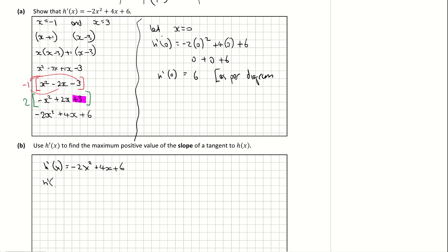So I'm finding h'(1). And that is equal to -2(1)² + 4(1) + 6. So I'm just subbing in my x coordinate, which is 1. And that is giving me -2 + 4 + 6, which is 10 - 2, which is 8. And that is our solution then to part B.